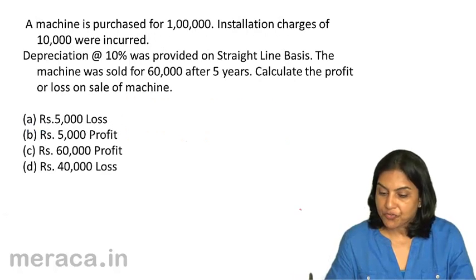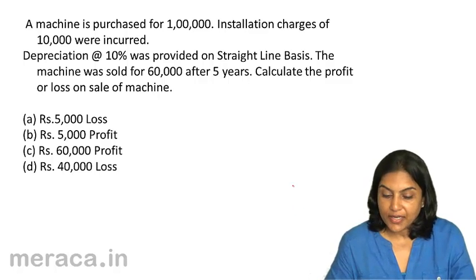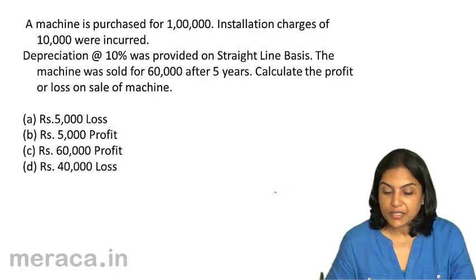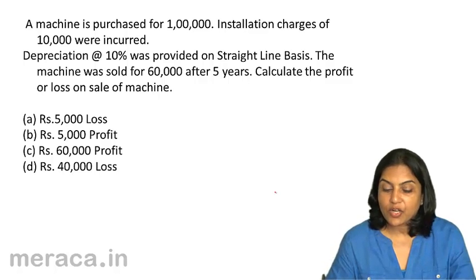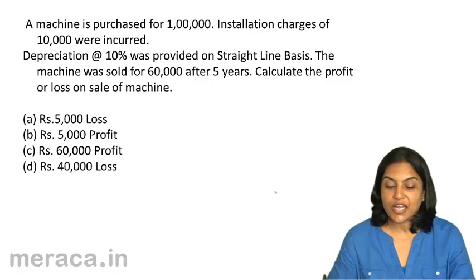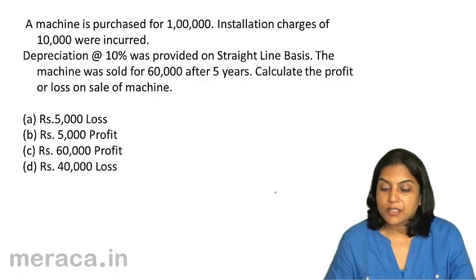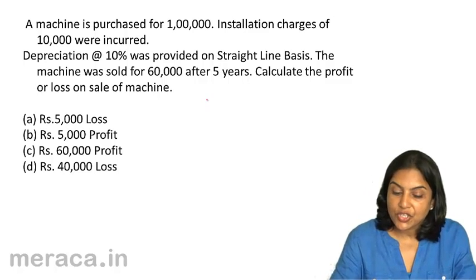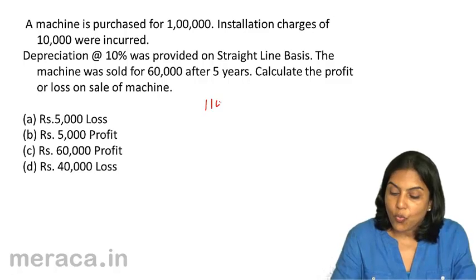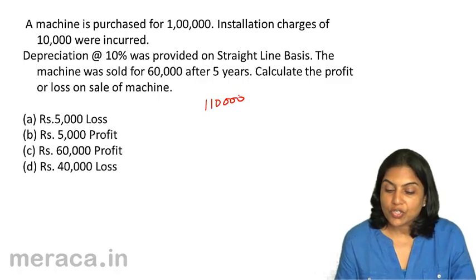Next: a machine is purchased for Rs. 1 lakh. Installation charges of Rs. 10,000 are incurred. Depreciation at the rate of 10% is provided on a straight line basis. The machine was sold for Rs. 60,000 after 5 years. Calculate the profit or loss on sale of machine. Options: A. 5,000 loss, B. 5,000 profit, C. 60,000 profit, D. 40,000 loss. The machine cost is Rs. 1 lakh plus Rs. 10,000 installation — total cost Rs. 1,10,000.